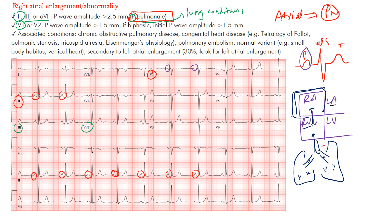Congenital heart disease — such as tetralogy of Fallot, pulmonic stenosis, tricuspid atresia, and Eisenmenger's physiology — can also cause this. If the pulmonary valve is stenotic, pressure backs up. A pulmonary embolism can also cause it: an embolus in a main branch of the pulmonary artery can cause RV strain, troponin leak, and eventually right atrial enlargement.